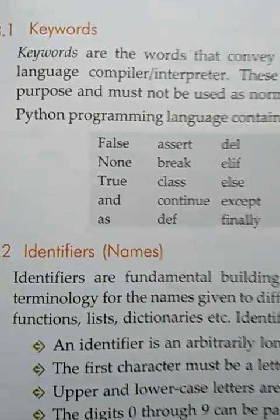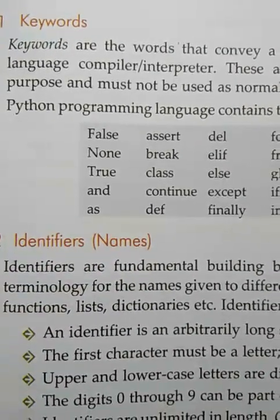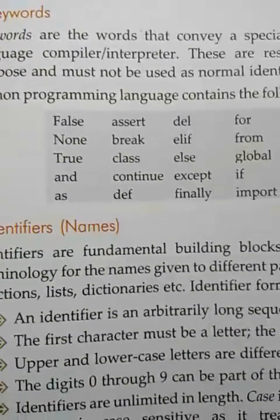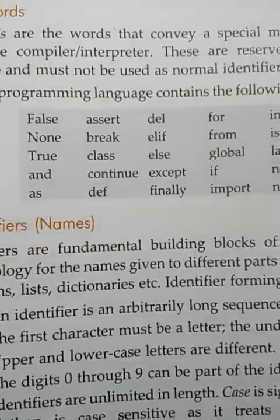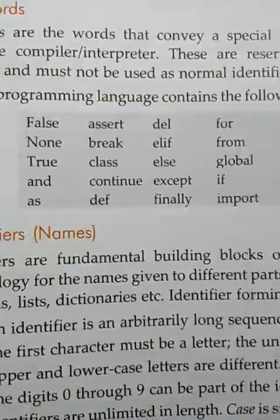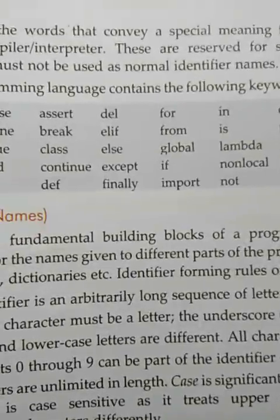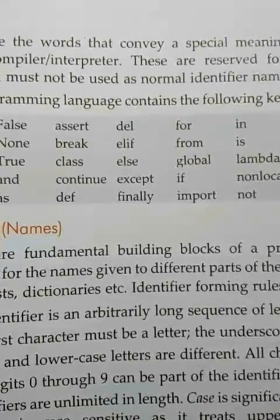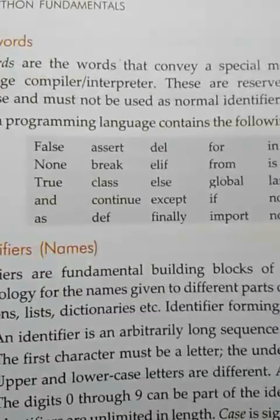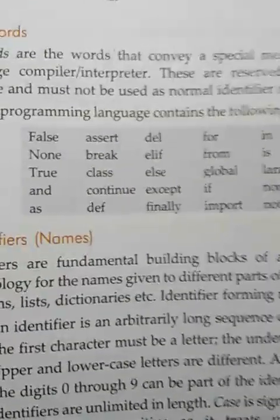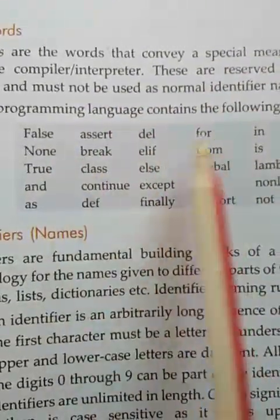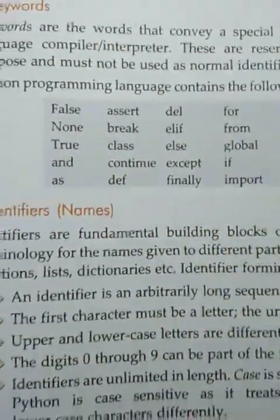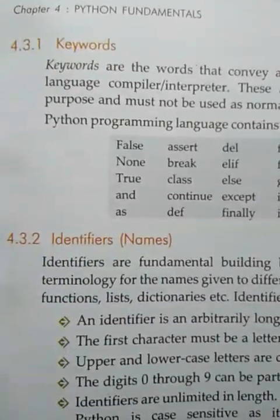Keywords are the reserved words in a programming language which are reserved for a special purpose, so we cannot use these words as identifiers. Here is the list of keywords used in Python: False, assert, del, for, in, is, from, elif, break — and so on. We cannot use the name of any variable just like 'break', 'del', or 'for', because these are reserved for different purposes.